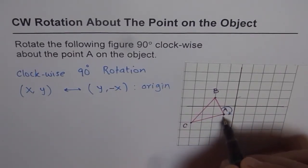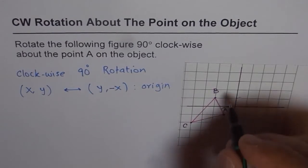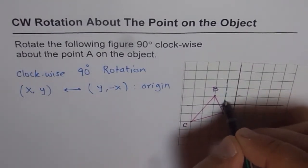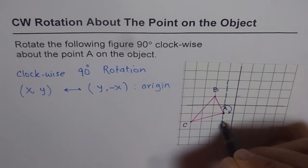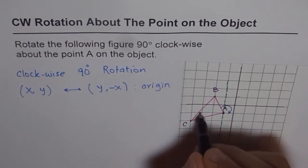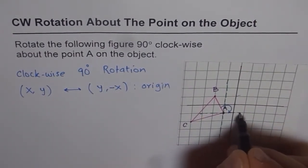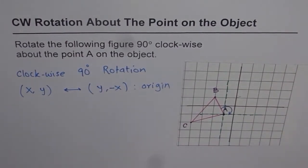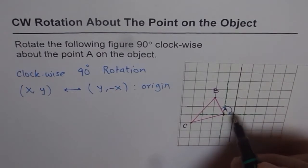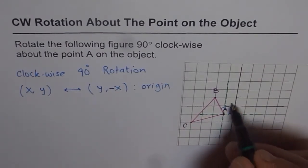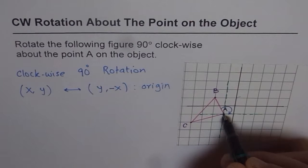We will make A the origin by creating a new axis. I'm drawing in green a new axis with A as its origin. This becomes our new coordinate system with A at the origin.